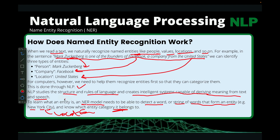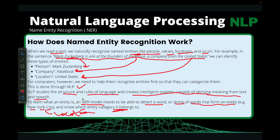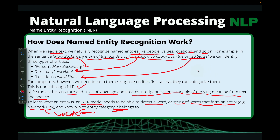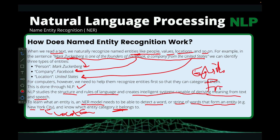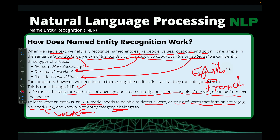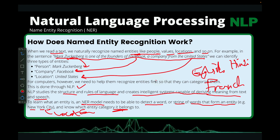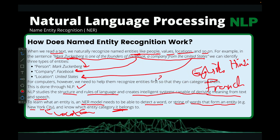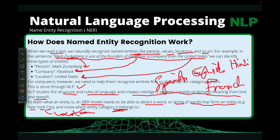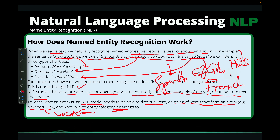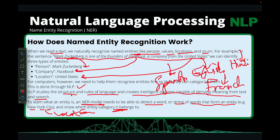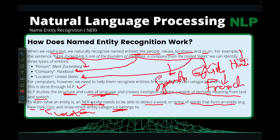The model has to identify how the structure and rules of the language work, because identifying named entities in English is going to be different from identifying named entities in French, Hindi, or Spanish. How you identify named entities in Spanish is different from how you identify them in English or Hindi. So the NER model needs to study the structure and rules of the specific language in order to be able to do that.